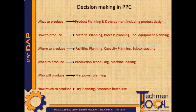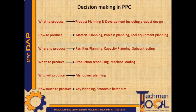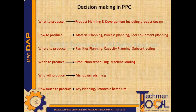Decision making in PPC involves: what to produce — meaning product planning and development including product design; how to produce — covering material planning, process planning, tool and equipment planning; where to produce — facilities planning, capacity planning, subcontracting; when to produce — production scheduling and machine loading; who will produce — manpower planning; and how much to produce — quantity planning and economic batch size.